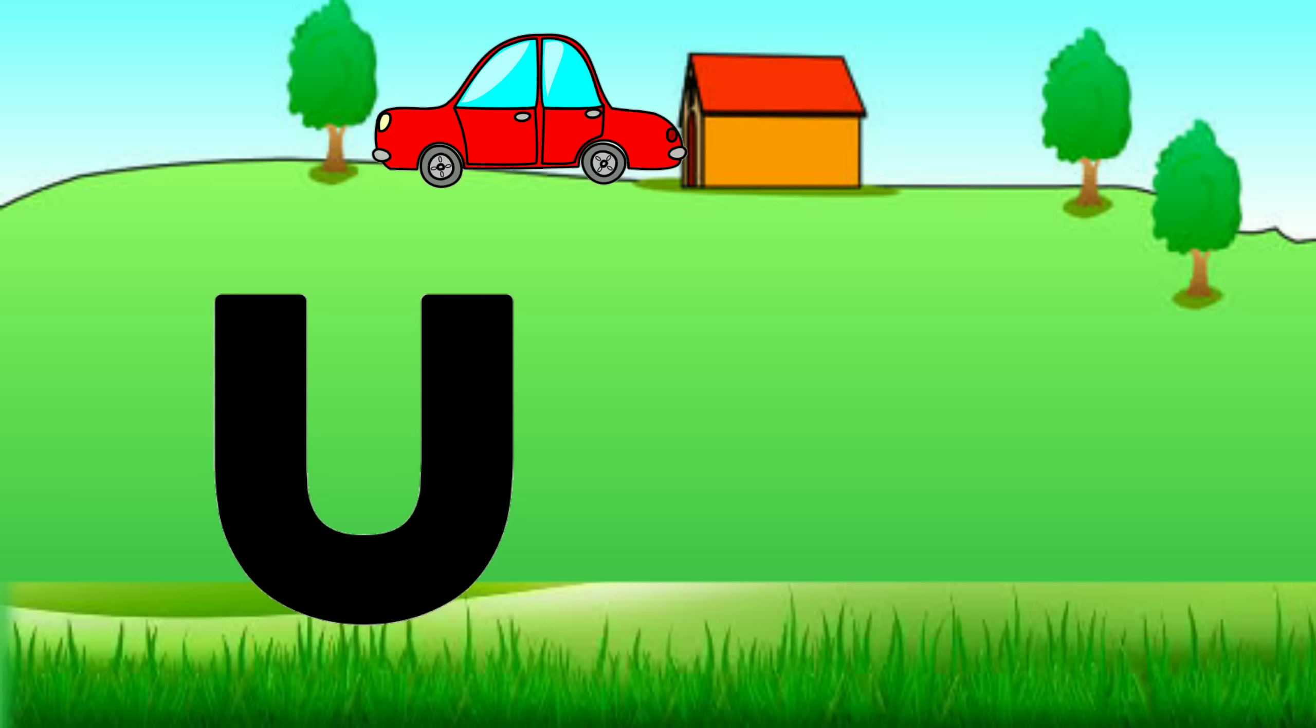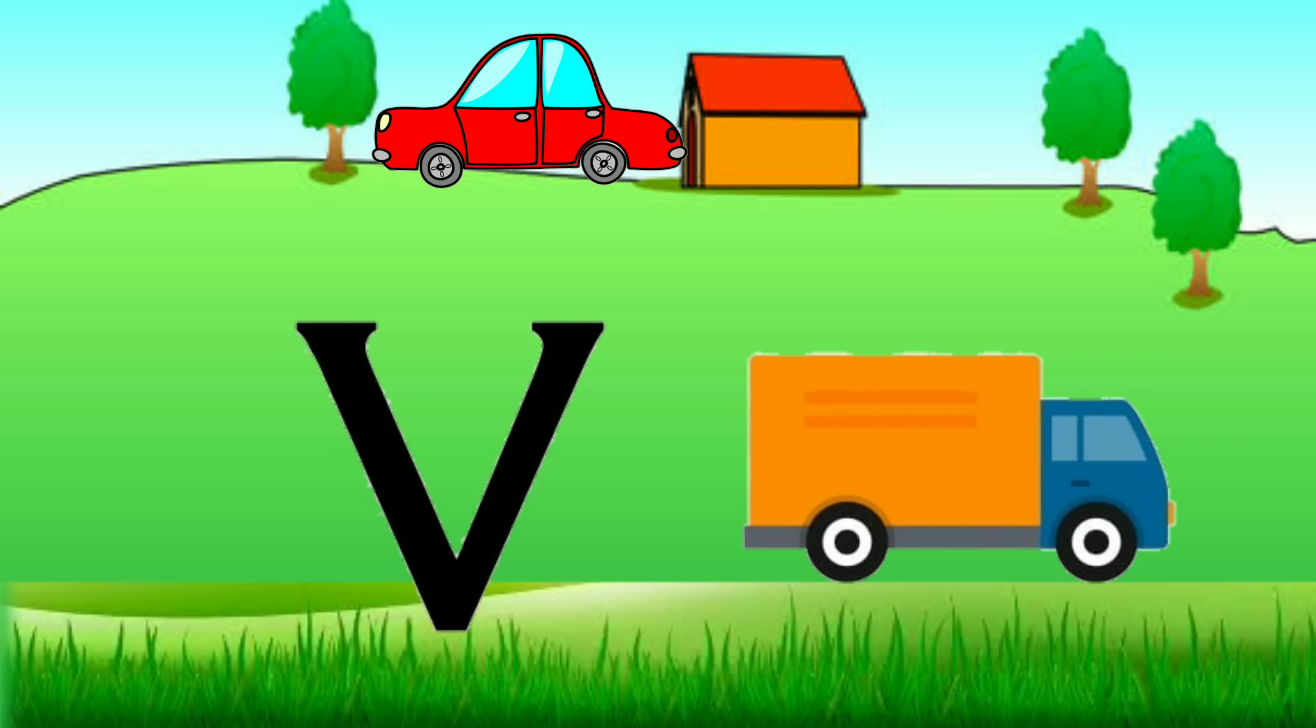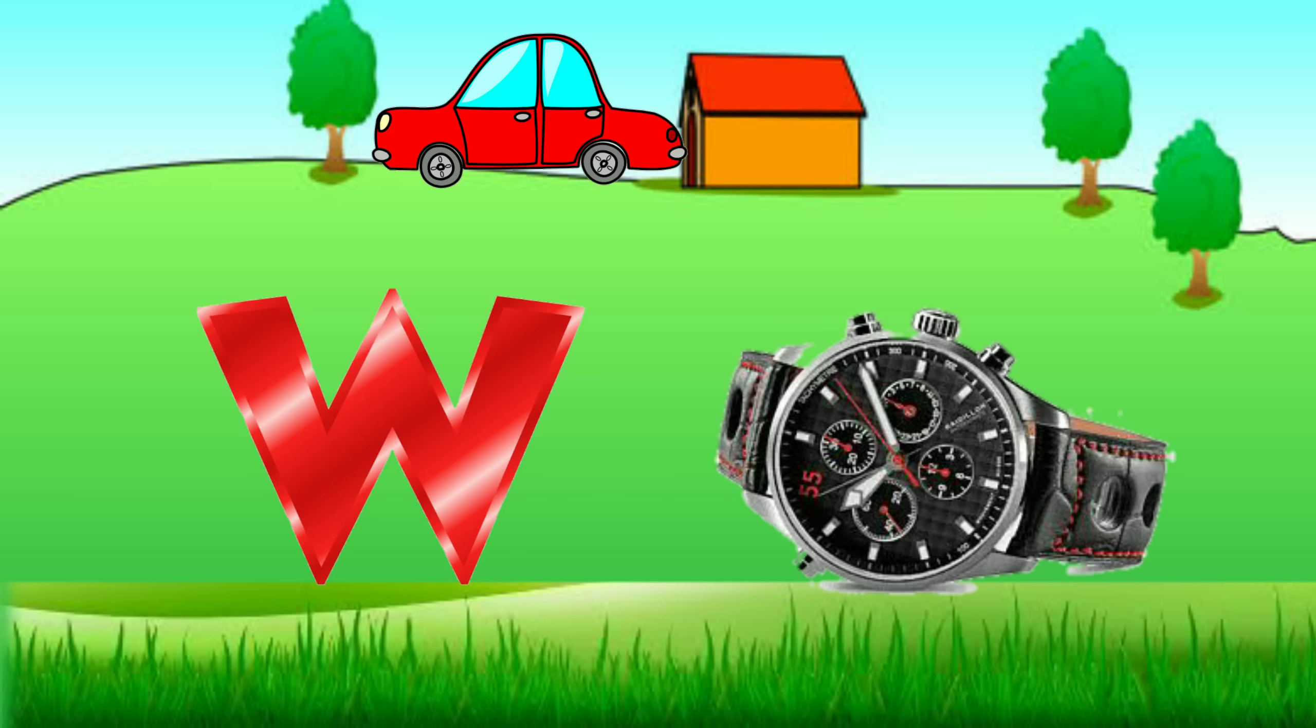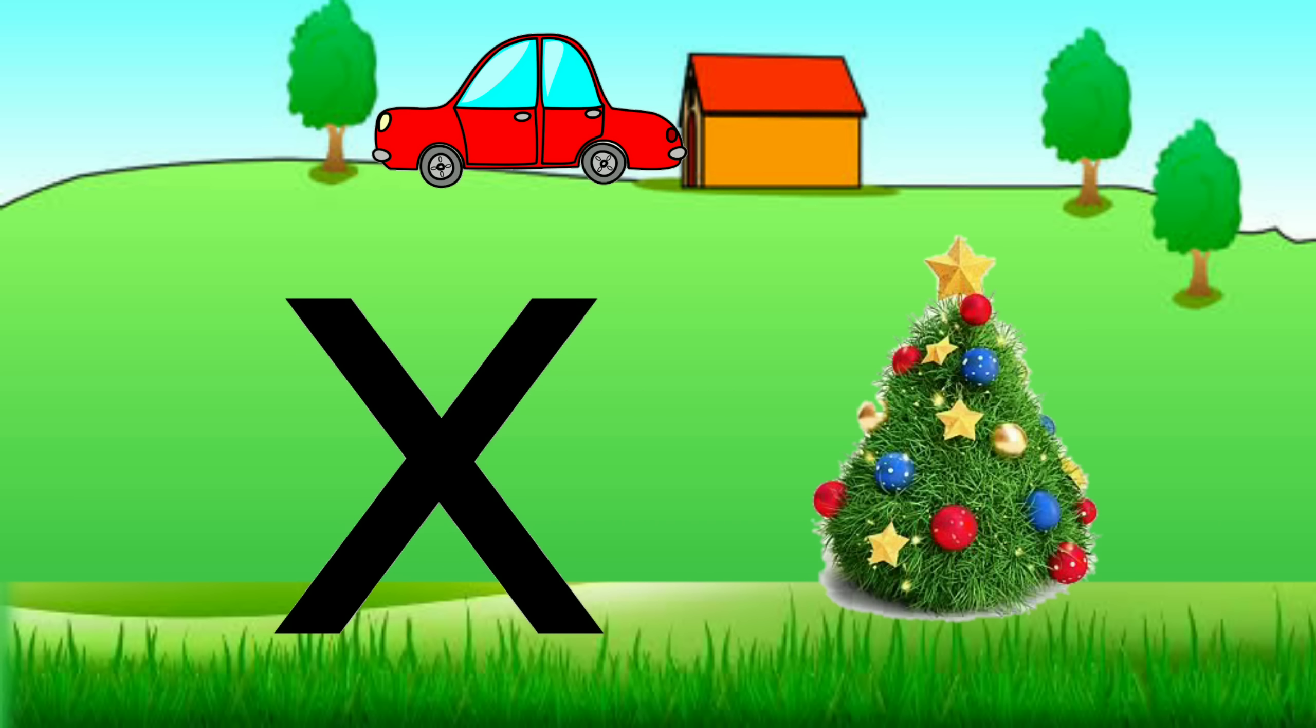U for umbrella, V for van, W for watch, X for X-mas tree.